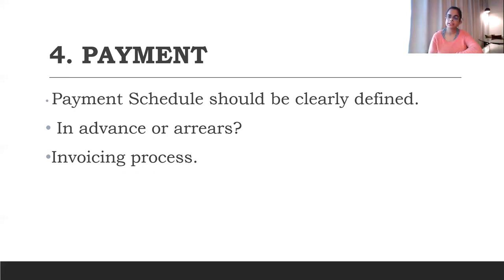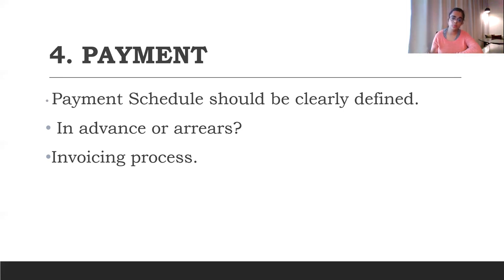Now, payment. The MSA may have a payment clause as well, but the payment terms for each scope of work may be different depending upon the nature and complexity of the work. The payment schedule should be clearly defined in the scope of work — whether it's payable in advance, whether it's payable in arrears, whether any refunds are allowed. The invoicing process should also be step by step defined: within what time period should the vendor invoice the customer, within what time period the payment needs to be made, and whether there is any delayed interest payment. All those things need to be mentioned in the SOW.